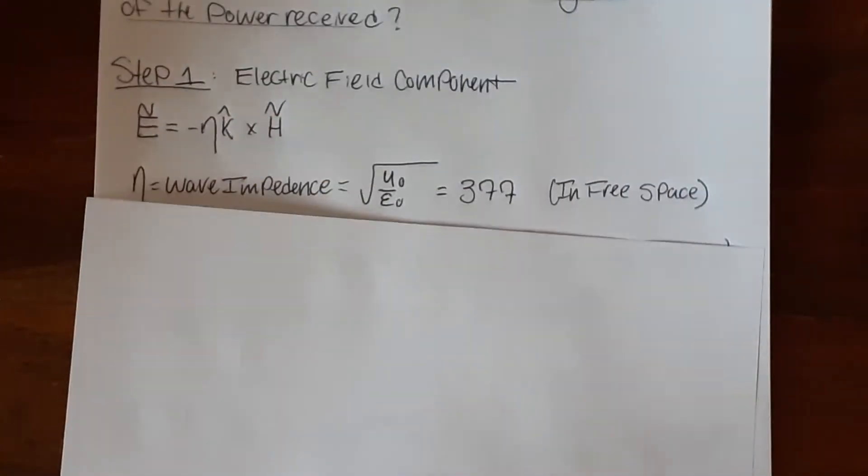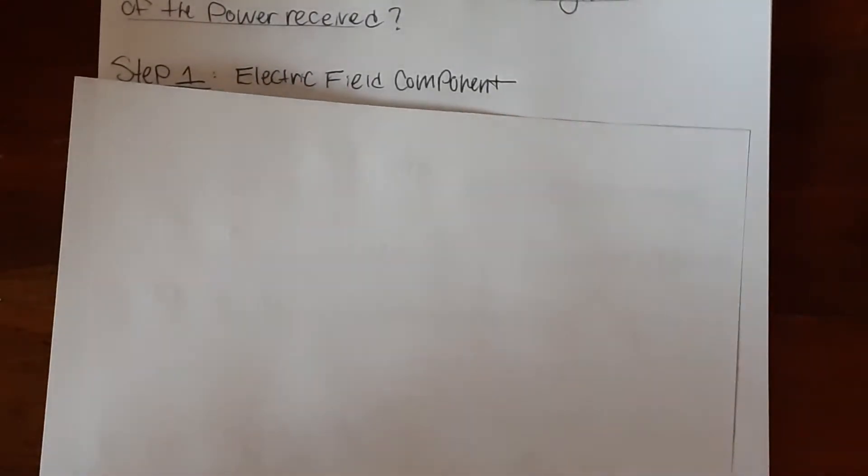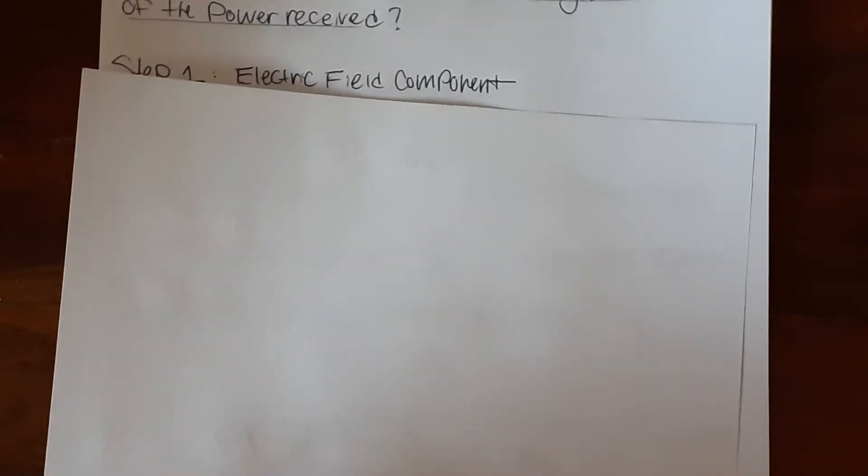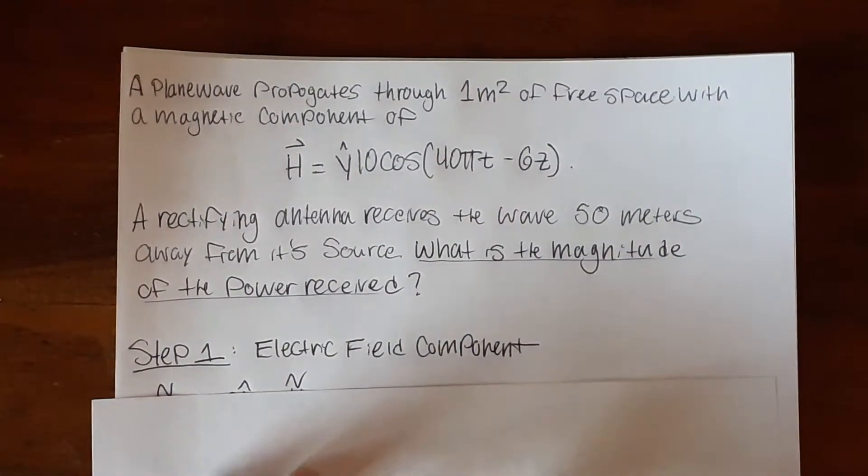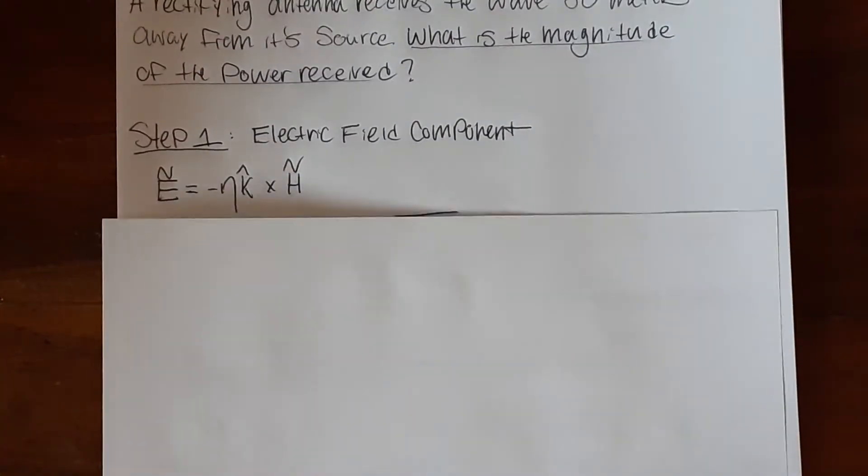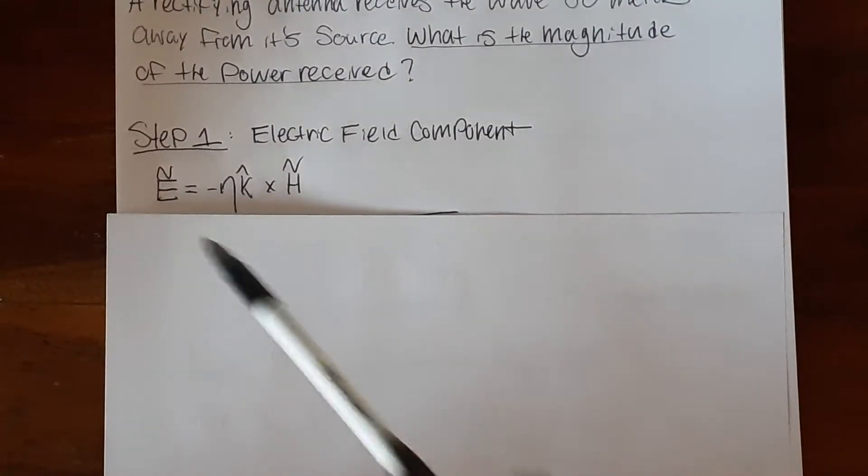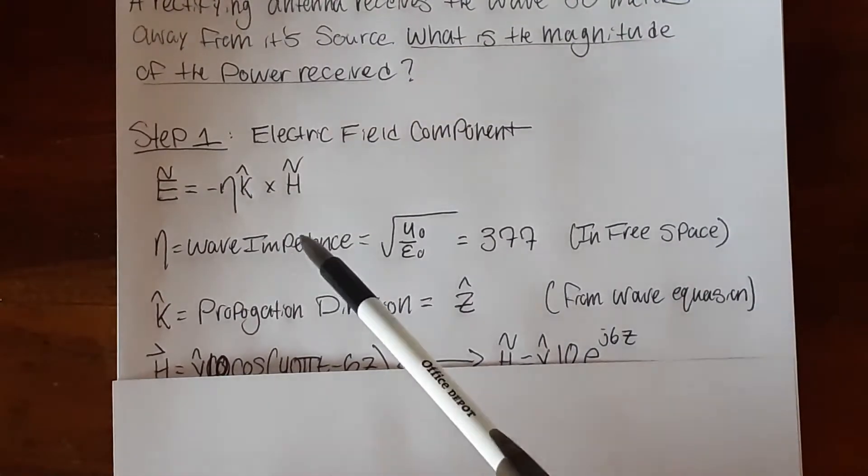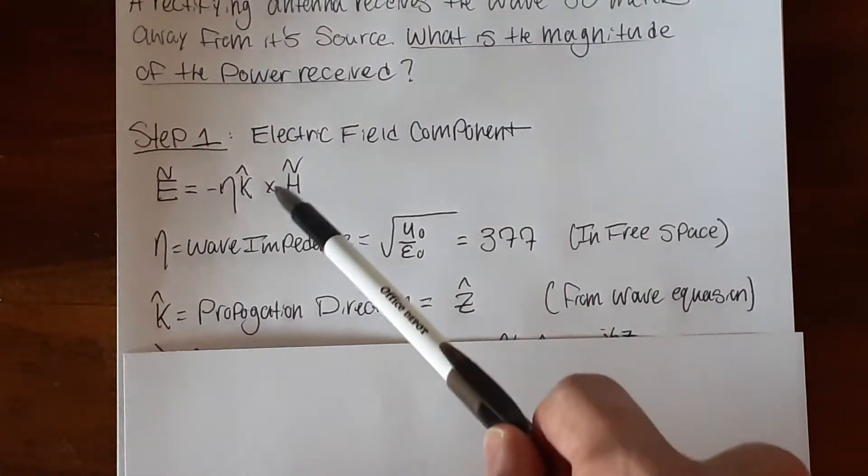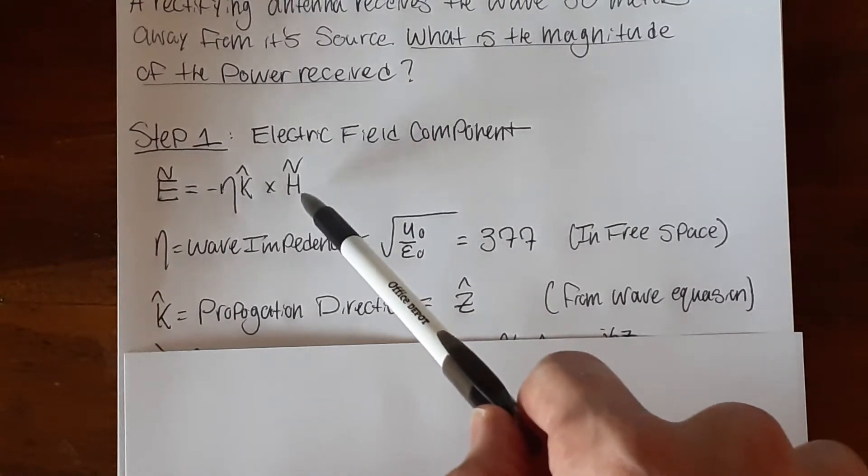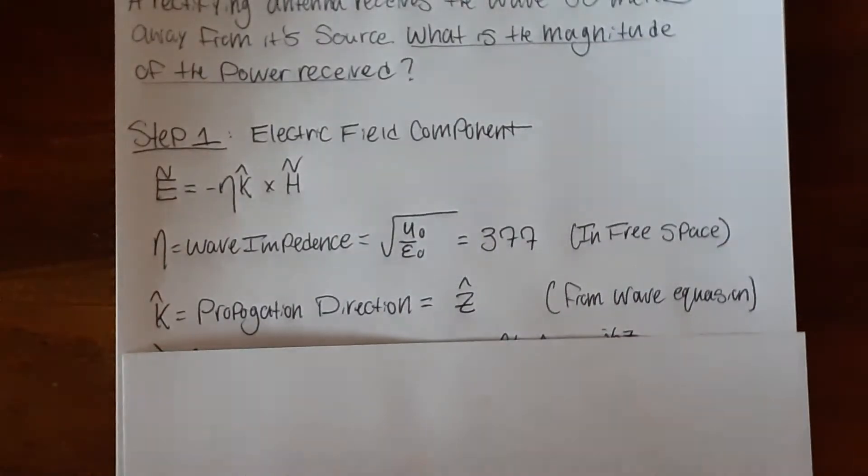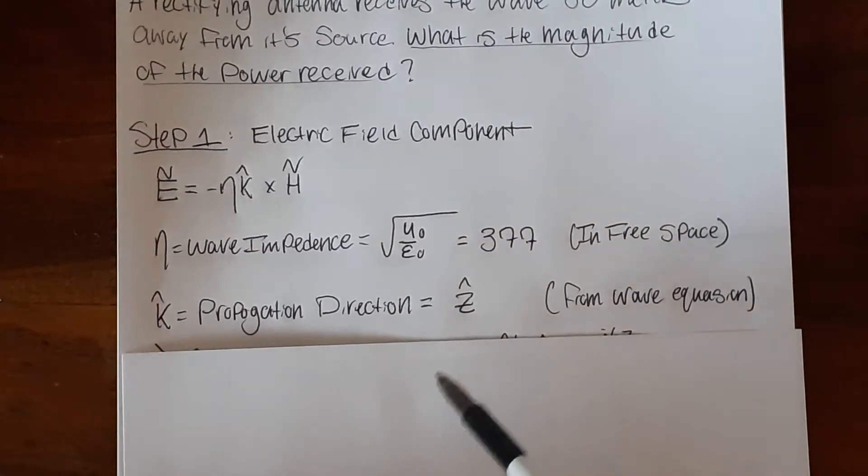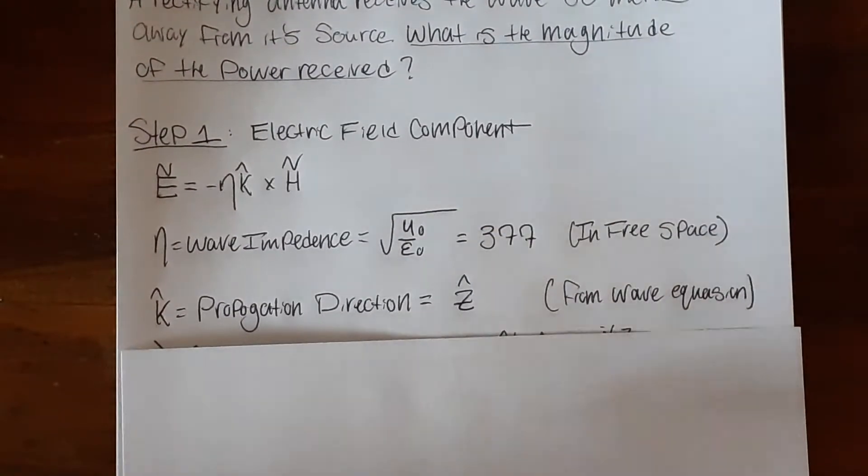So the first step in this equation is to find the electric field component because these electromagnetic waves have both an electric and a magnetic component. So to find the electric field component we can use a nifty relationship that happens in a lossless medium. Since we are in free space that is a lossless medium, so we can use the following relationship where the phase domain of the electric field is equal to the wave impedance multiplied by the propagation direction of the wave and the cross product of the phase domain of the magnetic component. So first we need to find the wave impedance which in a lossless medium is going to just be free space. So that's going to be 377 because it's just the two universal constants over one another in a square root.